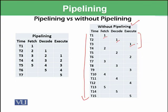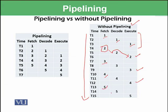Once the first instruction has been executed, at time T4 the second instruction is fetched, then decoded and executed until time T6. At T7, instruction 3 is fetched and finished by T9. At T10, instruction 4 is fetched and completes its cycle by T12. At T13, the fifth instruction is fetched and executed by time T15.